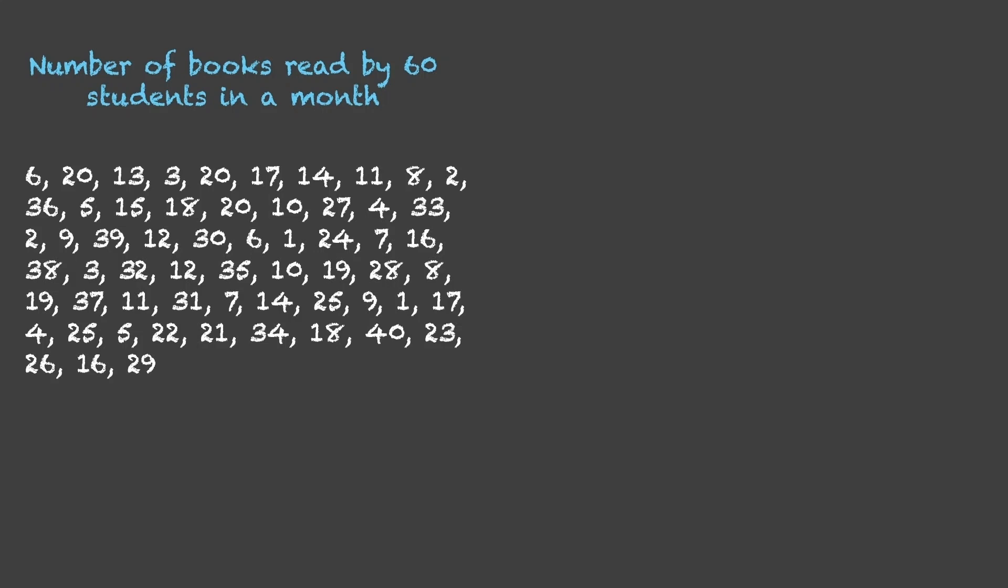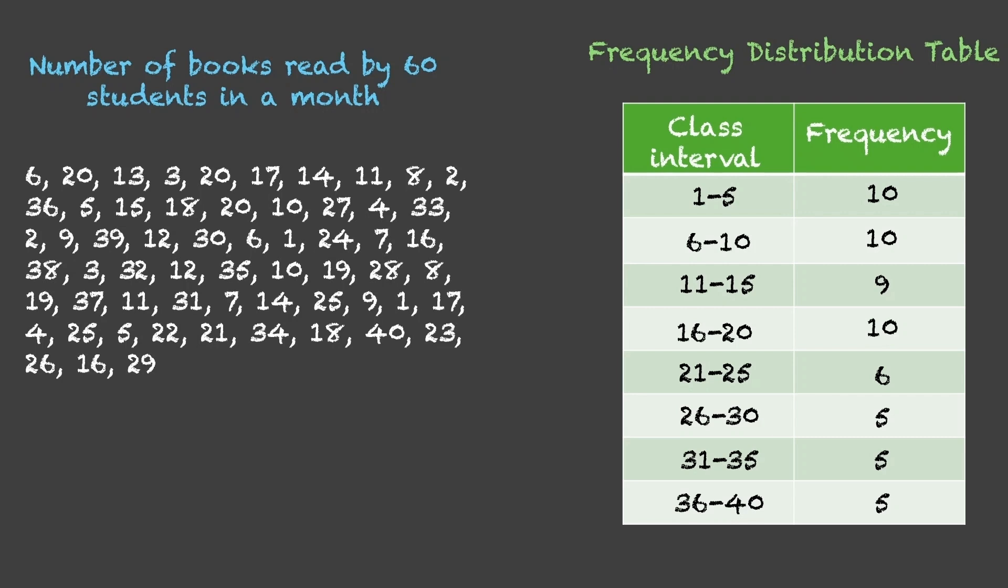And count how many values lie in each group. This count is called frequency. Such an organization of the data into groups is called frequency distribution table or grouped frequency distribution table.